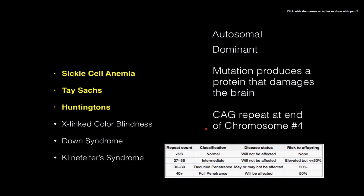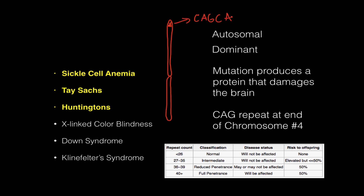If you look at chromosome number four, at the end of the chromosome there is a centromere, and at the bottom part — the end of chromosome number four — it's made up of these CAG repeats over and over again. Normal people have less than 26 of these CAG repeats and they won't have the disease, but if you have more than 40, you are definitely going to be affected, and you're going to pass that on to half of your kids.